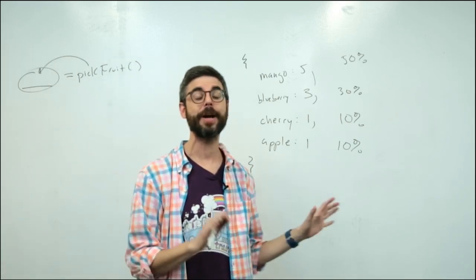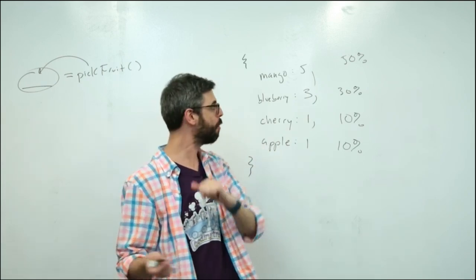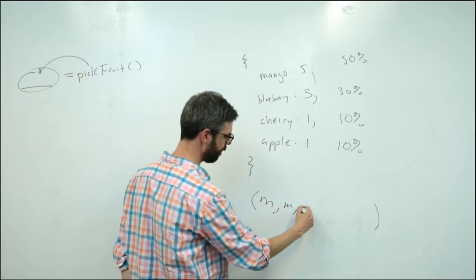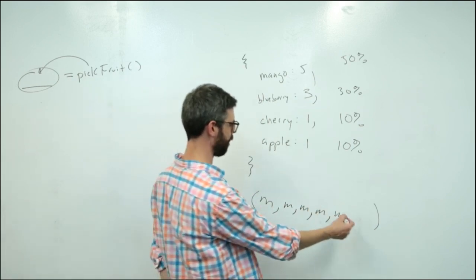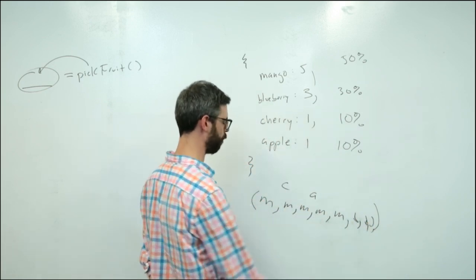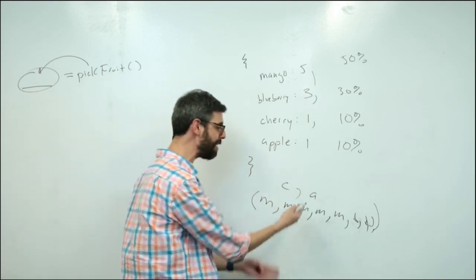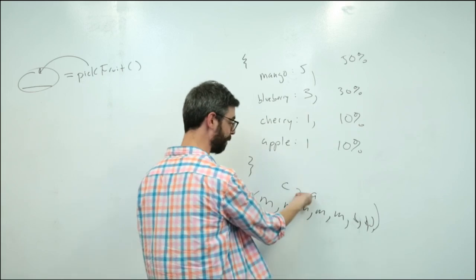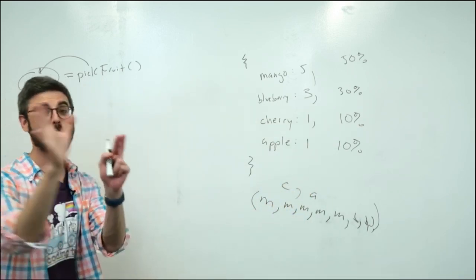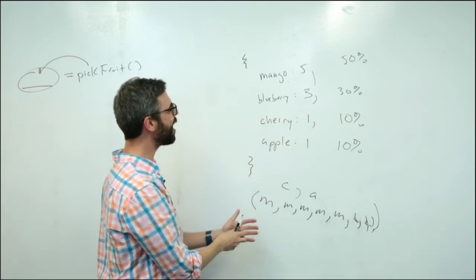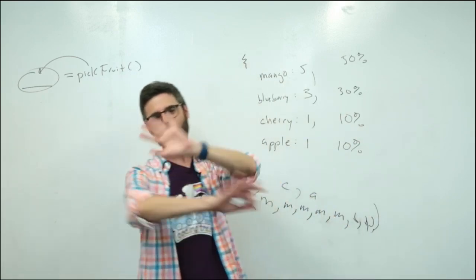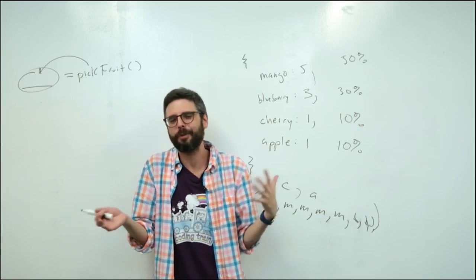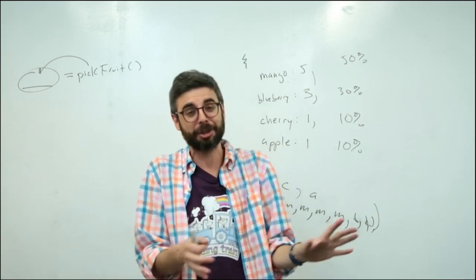If you've been watching my other genetic algorithm videos, I've done this a number of different ways. One way is to build a separate array and put mango in it five times, blueberry three times, cherry once, and apple once. So if you had a bucket full of all these letters — five M's, three B's, one C, one A — and you shuffle it and pick one randomly, you're going to pick M five times as often as A. That's one way of doing it, but there's a bit of an issue.